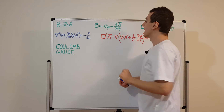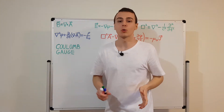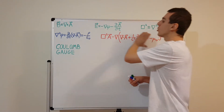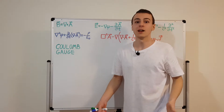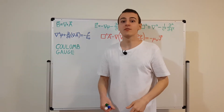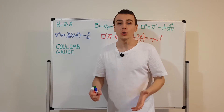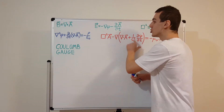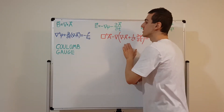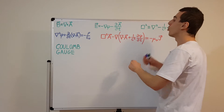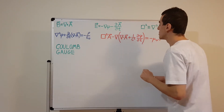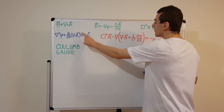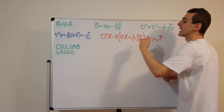If we impose a certain condition, that will allow us to simplify some equations. This blue and this red equation contain all of the information in Maxwell's equations. In Maxwell's equations there are four first-order partial differential equations, but here we repackage them into two separate second-order inhomogeneous partial differential equations with source terms.